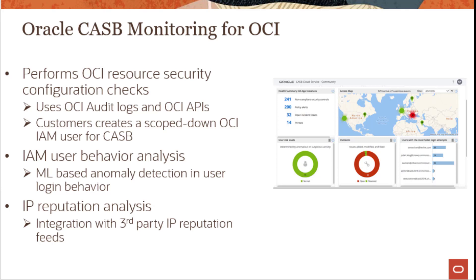To enable CASB monitoring for OCI, you first create an Oracle Cloud Infrastructure application instance with Oracle CASB. Then you provision it with the API keys and credentials of a least-privileged IAM user who is authorized to get configuration information and audit logs from your OCI account. Once done, Oracle CASB periodically obtains the tenancy configuration information and audit logs, performs security analytics, and generates alerts for any deviation from the configured security baseline.